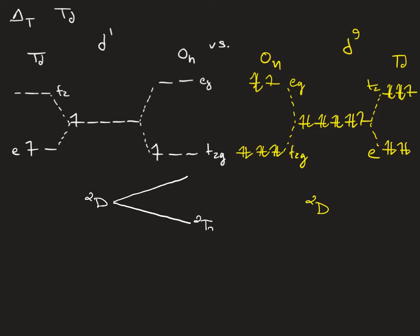As you increase the tetrahedral field strength, delta T, that doublet D term also splits, but now the doublet E term is lower in energy than the doublet T2 term.